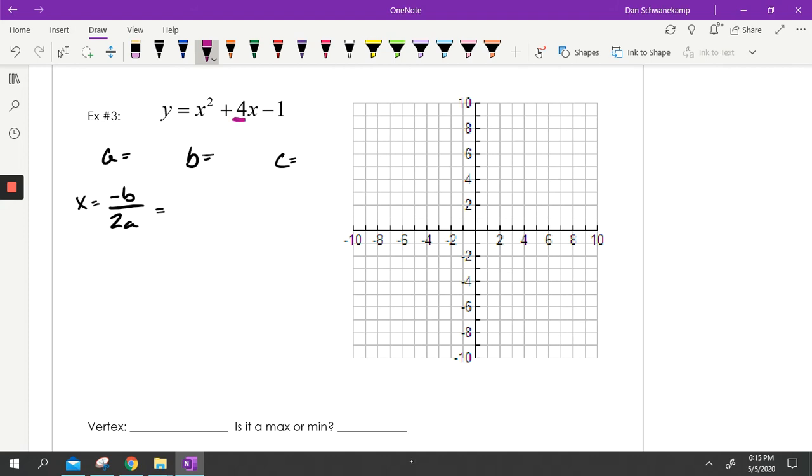I don't think you necessarily have to because what we're really trying to get is our X value, which is that negative B over 2A formula. So if I'm doing negative B, well, this is my B. It's 4. So if I'm doing negative B, it's negative 4 divided by 2A. So that's 2 times my A value, which is 1. So negative 4 divided by 2. My X value is negative 2.